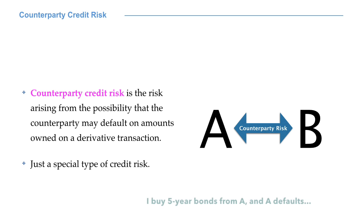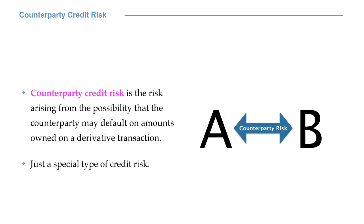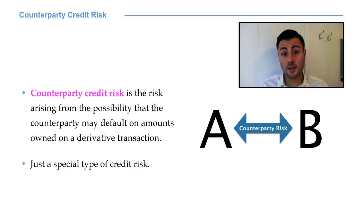Assume I buy some 5-year bonds issued by company A. If company A defaults before maturity, I will lose money, as I will not be able to get my capital back. When dealing with CDS, we have seen a simple way of hedging counterparty credit risk.